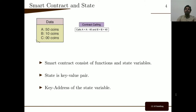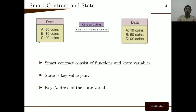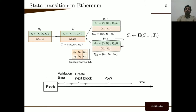Contract-calling transactions update these variables and hence update the state. For example, let's say SI-1 is the previous state and TI is the set of transactions executed on top of SI-1. Because TI updates the state SI-1, it will result in a new state SI. Because we have used Ethereum in this work, I will explain the state update and block processing in Ethereum.